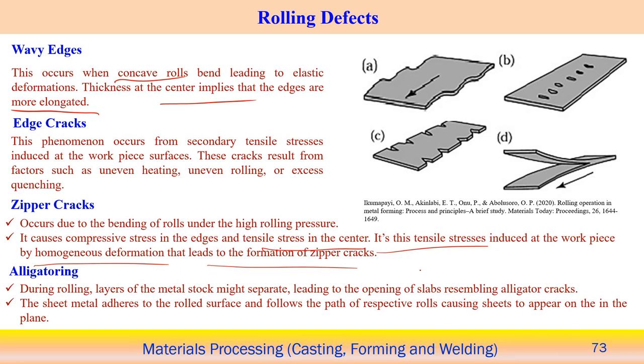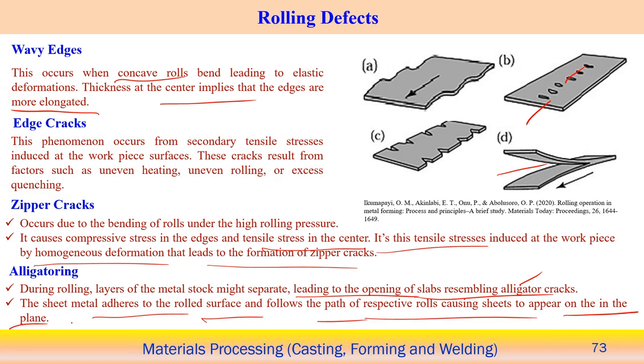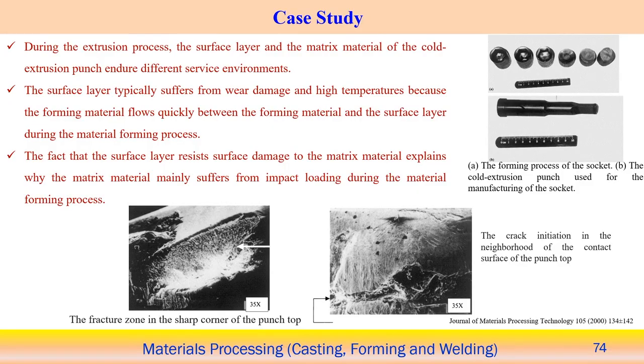Finally, alligatoring: during the rolling process, layers of the metal stock might separate, and in some cases the layers open up creating alligator cracks. The seed metal adheres to the roll surface following the path of the respective roll, causing this appearance. Localized or non-uniform deformation in a very localized position — usually along the center of the component — creates this alligator defect, which is one kind of defect associated with the rolling process.